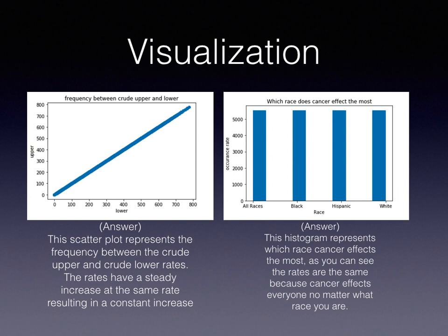As you can see on the left, the first visualization is the frequency between crude upper and crude lower. This scatter plot represents the frequency between crude upper and crude lower. The rates have a steady increase at the same rate, resulting in a constant increase. The second visualization is a histogram that represents which race cancer affects the most. As you can see, the rates are the same because cancer affects everyone, no matter what race you are.